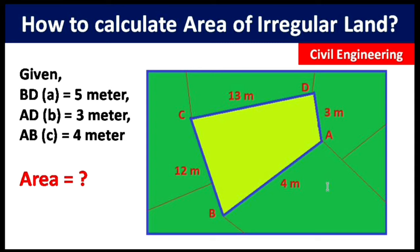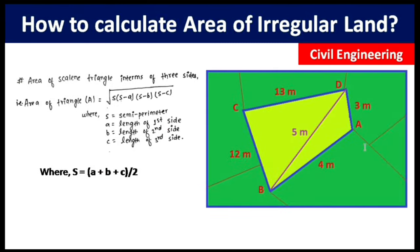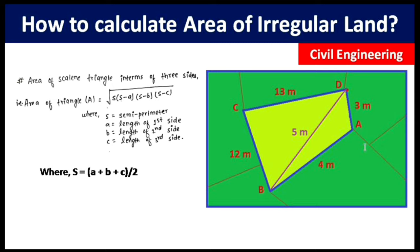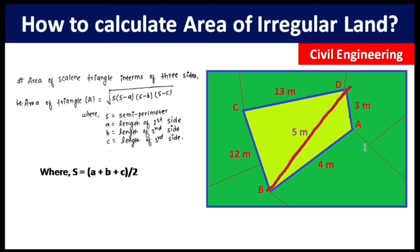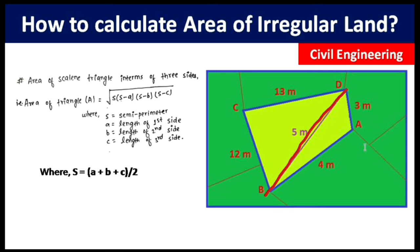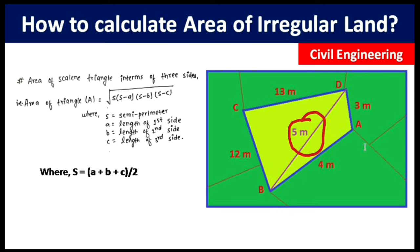Let's start the video. Here we have a land plot. First of all, what we have to do is draw a diagonal line — either this way or that way — dividing the plot into two triangles. After drawing the diagonal line, we measure it. Let's say the diagonal length becomes 5 meters.